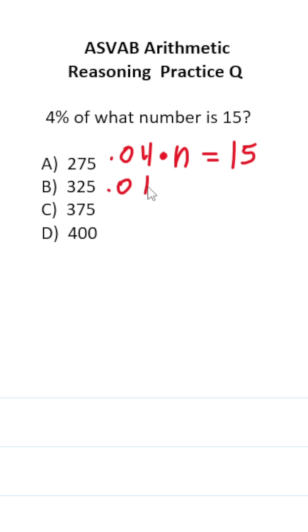Alright, let's work this out. This is 0.04N equals 15. By solving for N, we'll have our answer. So we're going to divide both sides by 0.04.